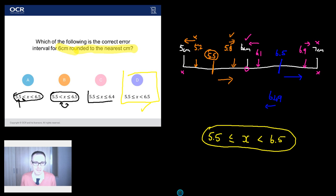And C's a classic mistake. C's looking good. All those numbers in between those two do round to 6 to the nearest centimetre. The problem is what about 6.45? He rounds to 6 as well, but he's not included in that inequality. A classic.